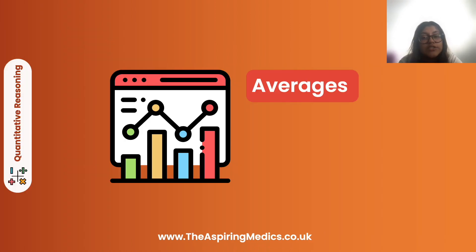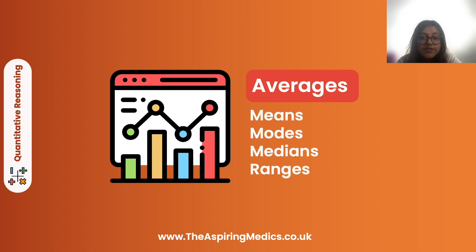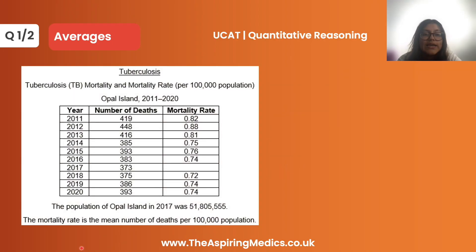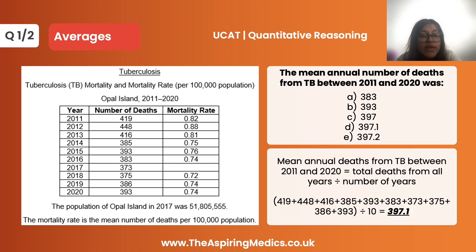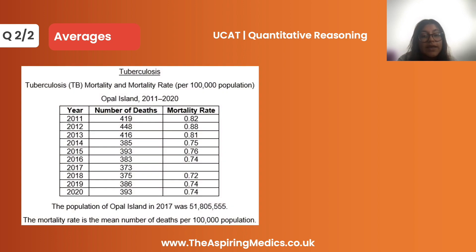Moving on to averages questions. A table shows tuberculosis mortality on Opel Island — the years, number of deaths per year and mortality rate. The mean annual number of deaths from tuberculosis between 2011 and 2020 is found by adding all deaths from those years and dividing by 10. The answer is 397.1, which is option D.